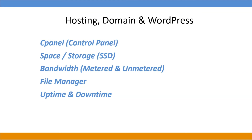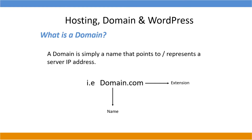A domain is simply a name that points to or represents a server's IP address. When you purchase a server, it's assigned a specific IP address that points to your server files. When you purchase a domain, the domain acts as a representation of that IP address. Whenever someone types the domain name, it moves to where the IP address is, grabs the files, and presents them to the user. Once we're setting up our WordPress website I'll explain everything in more detail.